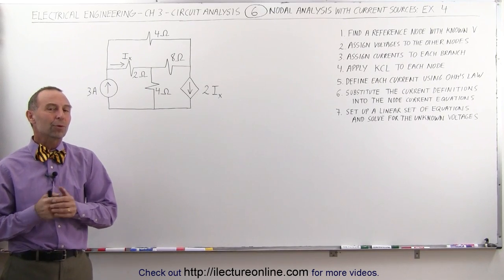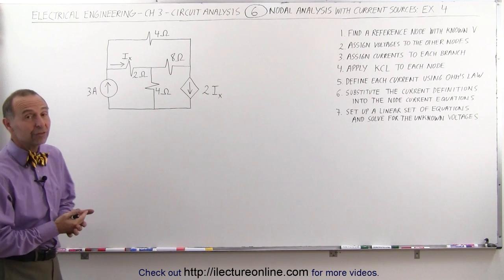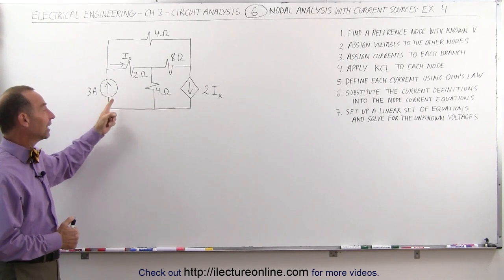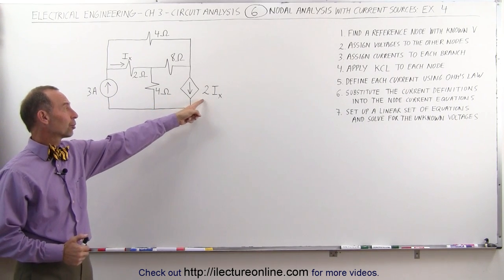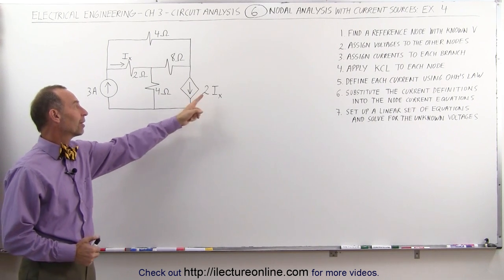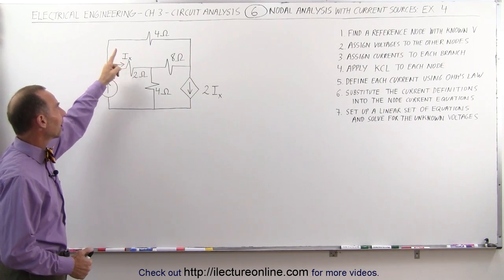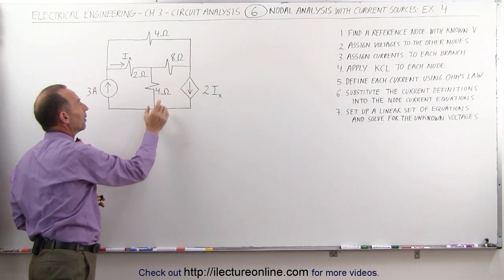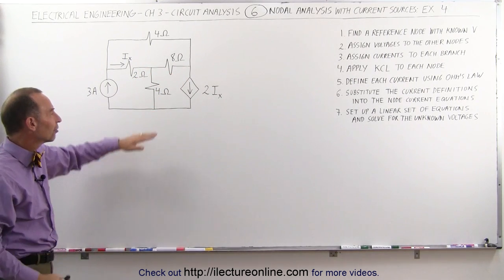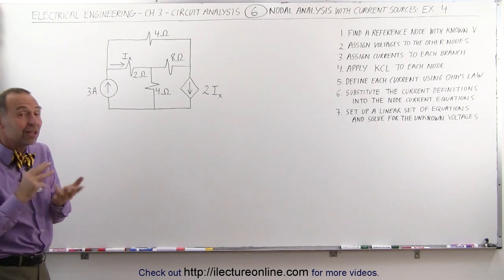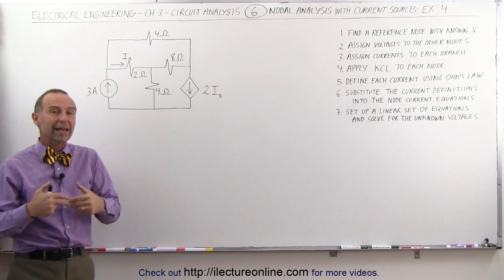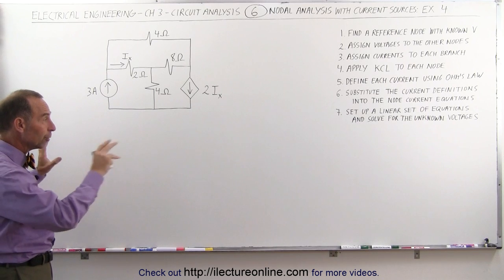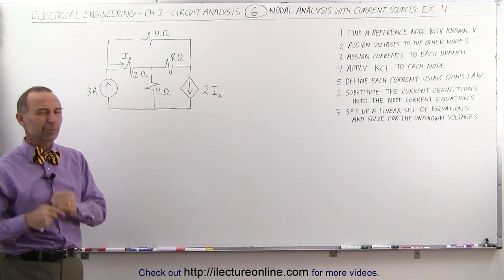Welcome to ElectronLine. Let's do a more challenging example of how to apply the nodal analysis method to find the voltages and currents in a circuit. We still have two current sources: one independent and one dependent. The current through one branch is twice the current through another, labeled I sub x. We have three nodes, plus a ground reference node at zero volts, giving us three equations and three unknown voltages. We'll likely need two separate videos to cover it all.